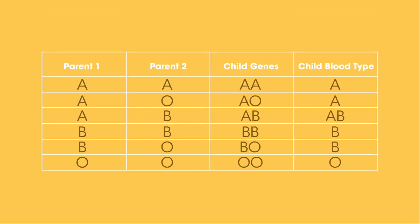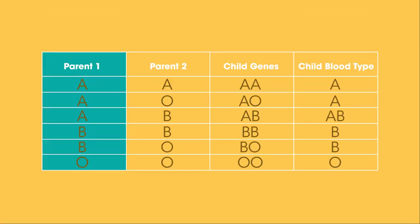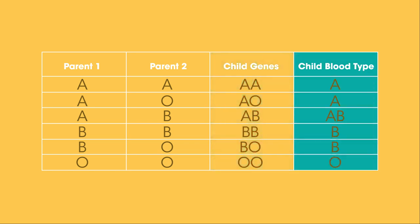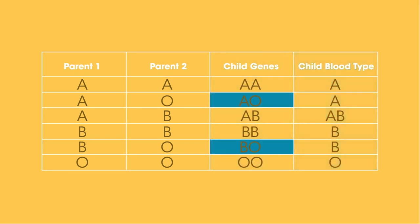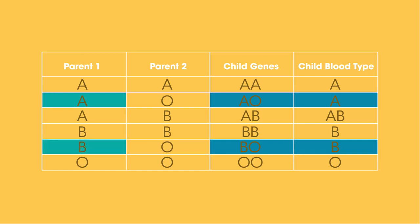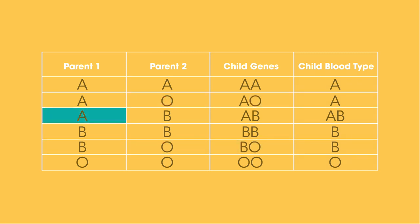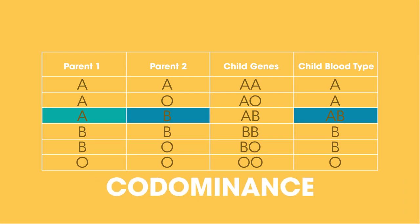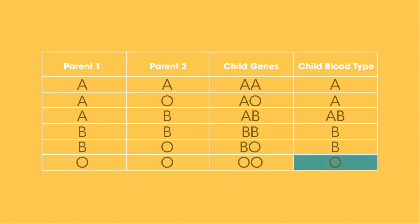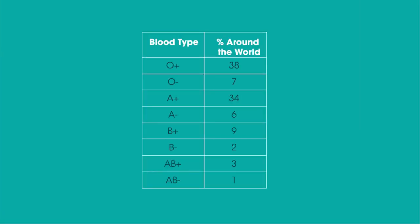Which type of antigen is presented on your red blood cells is determined through inheritance. You inherit one copy of the antigen gene type, or allele, from your mother and one from your father, which then determines your blood type. AO and BO end up as blood types A or B because the alleles for antigens A and B are both dominant over the allele for no antigens, O. Whereas if you have one parent as A and the other as B, giving you genes AB, then you'd be blood group AB — this is an example of codominance. To have blood group O, you need your genes to be OO, so both of your parents must also be O's, because the O allele is recessive. Despite being recessive, blood group O is the most common around the world.